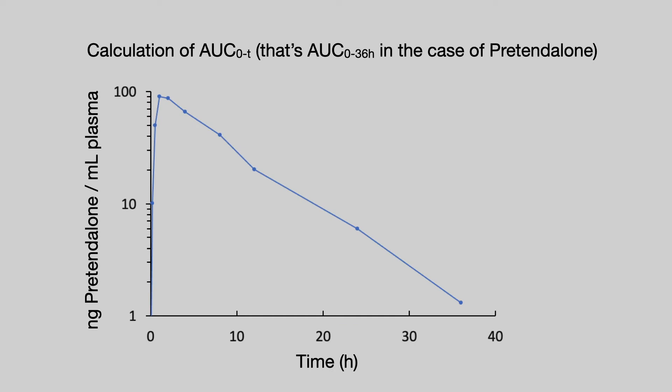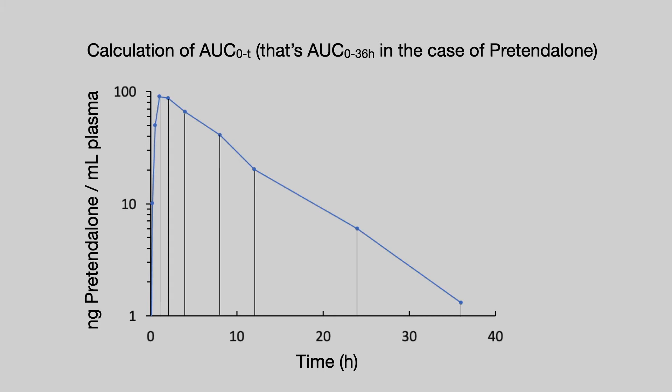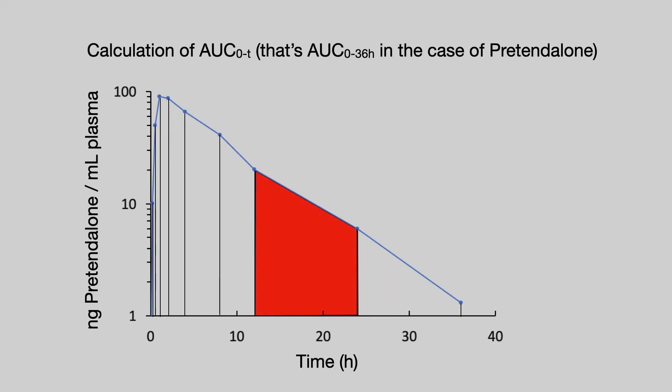Let's calculate AUC naught to T — that's naught to 36 hours for Pretendalone — using the oral data as an example. We take each of the data points, each time point where a blood sample was taken and the drug concentration measured, and drop lines down from the concentrations to the x-axis for time. When we do this, we form a series of shapes. Taking one as an example shown by the red block — that shape is a trapezoid.